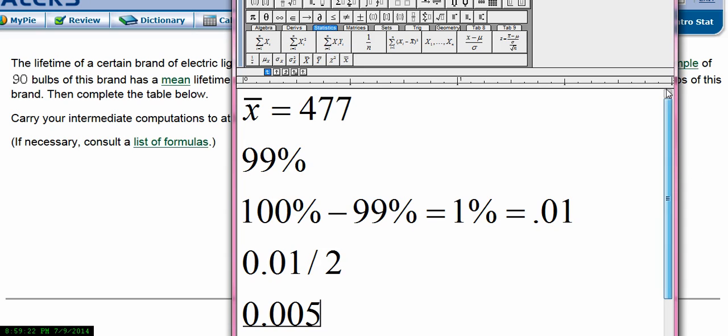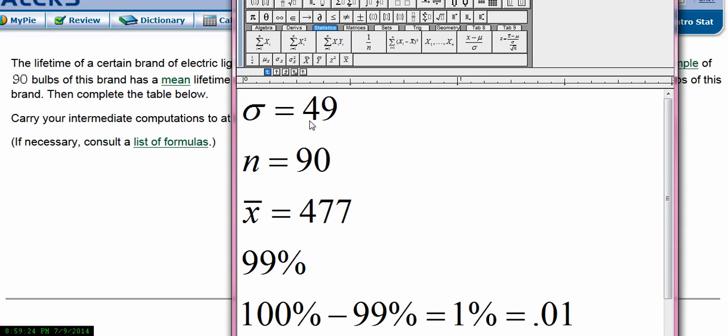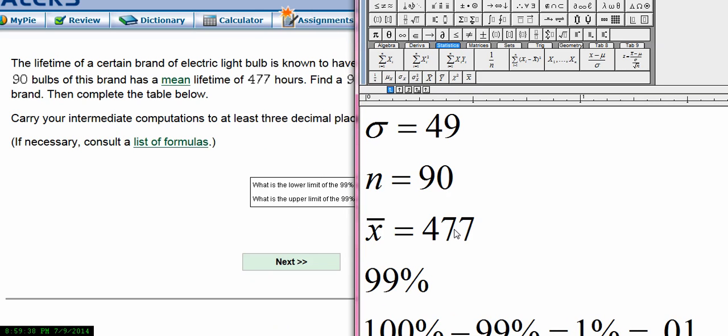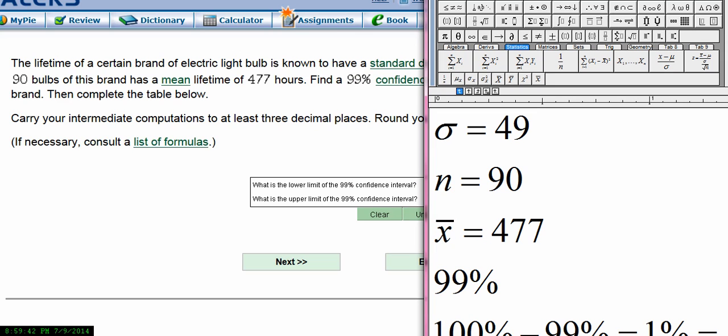So the first thing that we have on here is that the standard deviation for the population is denoted sigma, the Greek letter S, equals 49. Then they tell us that we have a sample of 90 bulbs of this brand, and then it had a mean lifetime of 477. And so I've captured that there. And then they ask us in this problem to find a 99% confidence interval.